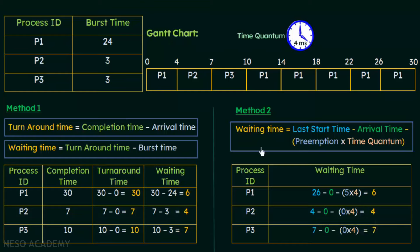For P3: last start time = 7 milliseconds. P3 also got the CPU just once and completed its execution at that time, so it was never preempted — preemptions = 0. Waiting time = 7 − 0 − (0 × 4) = 7 milliseconds. Comparing both methods, we get the same answers. Method 1 is used when you need both turnaround time and waiting time; method 2 is used when you only need waiting time.